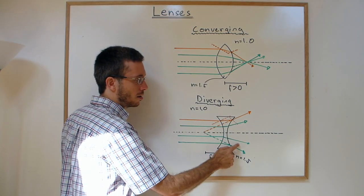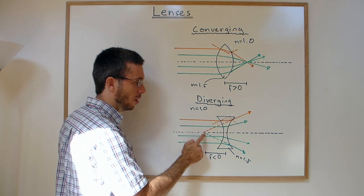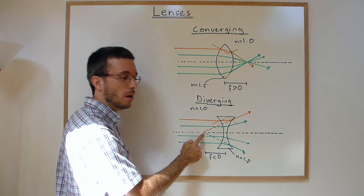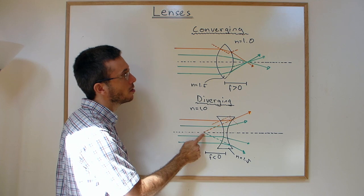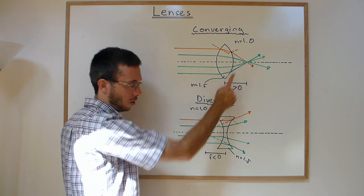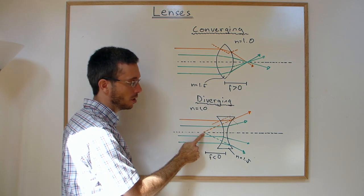Interestingly, if we backtrack where these diverging rays appear to come from, they all appear to come from a point we call the focal point. However, this focal point is not real - it's a virtual focal point, as the light never actually went through this point.